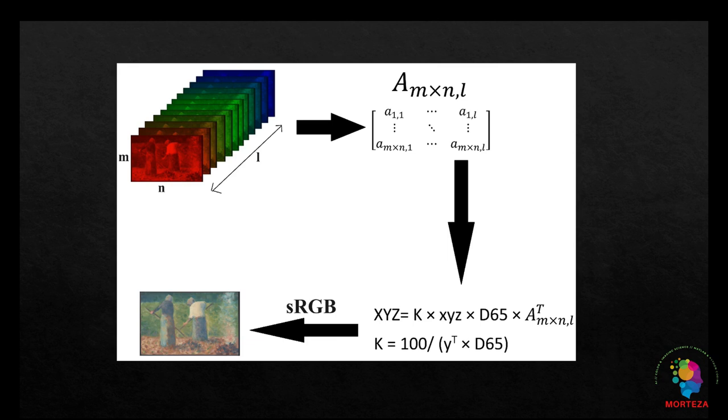First, you have to reshape the hyperspectral data into a matrix shown as here. And then you have to change this matrix to a CIE XYZ tri-stimulus values matrix. You can do it by multiplying the matrix that contains the hyperspectral data by the data of the standard illuminant and the standard observer, and multiply that by a normalizing factor as shown here.